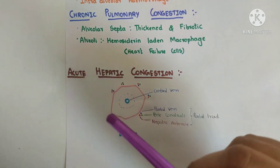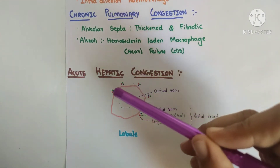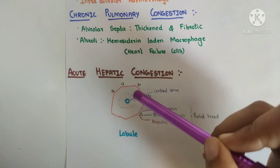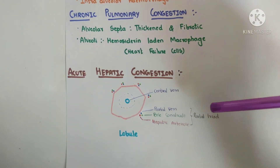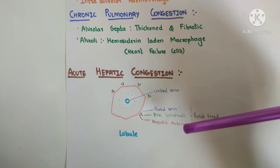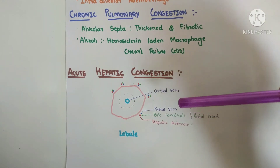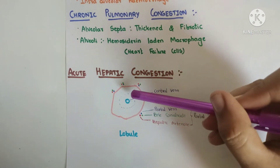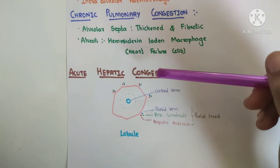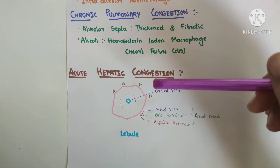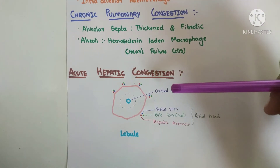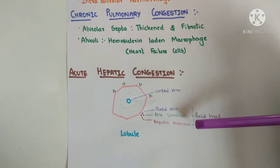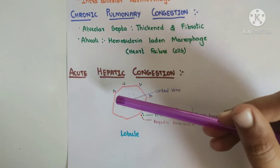Now let's observe what happens in hepatic congestion. When hepatic congestion is acute, we first need to understand the microscopic structure of the liver lobule. There is a central vein at the central position, and in the periphery we can observe the portal triad, which includes the portal vein, hepatic arteriole, and bile canaliculi. When there is venous congestion, the central vein will be engorged, and hence the centrilobular area is more affected — being devoid of oxygenated blood and surrounded by deoxygenated blood — whereas the perilobular area contains the hepatic arteriole and may get some nutrition. So we can observe necrosis in the centrilobular area.